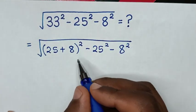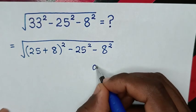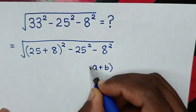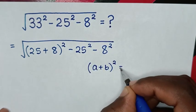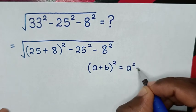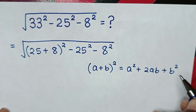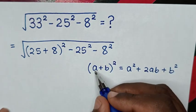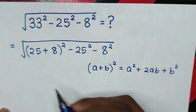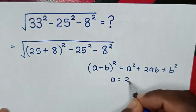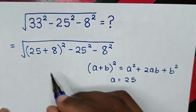Then, the next step, from this part, is in the form of a plus b bracket square is equal to a square plus 2ab plus b square. Then, when you compare a with this 25, then a is equal to 25 and b is equal to 8.